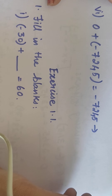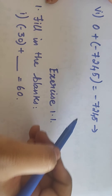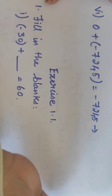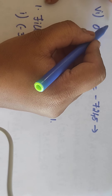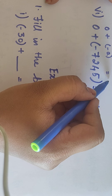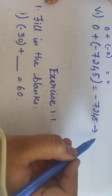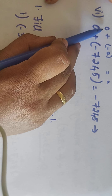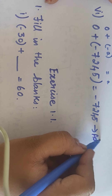Now 0 plus (-7245) equals -7245. Here we can name 0 as the identity element. So 0 plus (-A) equals (-A). That is, we can write it as: 0 is the identity element of addition — so this is additive identity property.